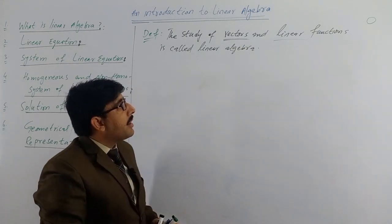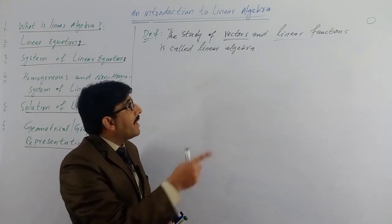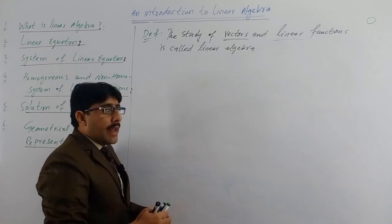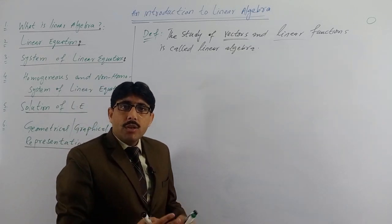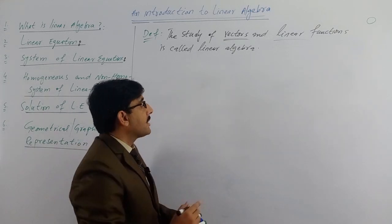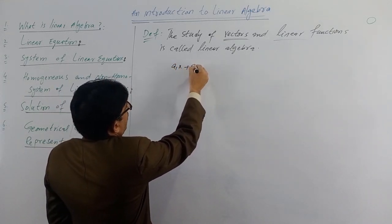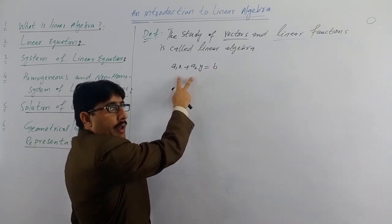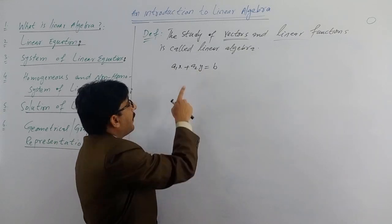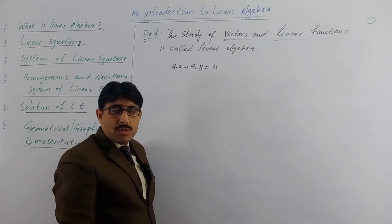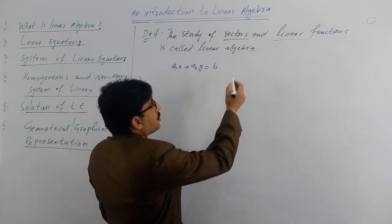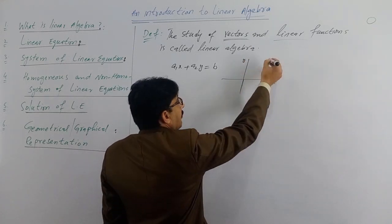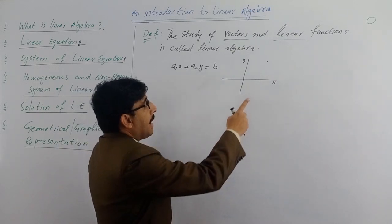Here we have vectors which represent quantities with magnitude and direction. In the x-y plane, a straight line is represented by the function a1x + a2y = b. This is an equation of a straight line in the x-y plane, where a1, a2, and b are constants, and x and y are the unknowns. Because we are talking about the x-y plane, in this plane we have two dimensions.